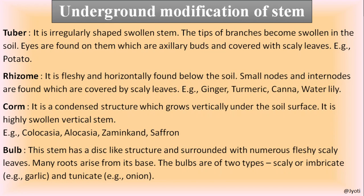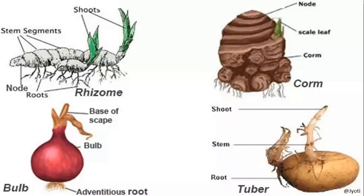Next is corm — a condensed structure that grows vertically under the soil surface. Unlike rhizome which grows horizontally, corm develops vertically. It is a highly swollen, vertical underground stem. Example: colocasia. Buds are developed on it, covered with brown scale leaves. Branches develop from the nodes bearing leaves. The whole structure is elongated and grows longitudinally — this is the key difference between corm and rhizome.